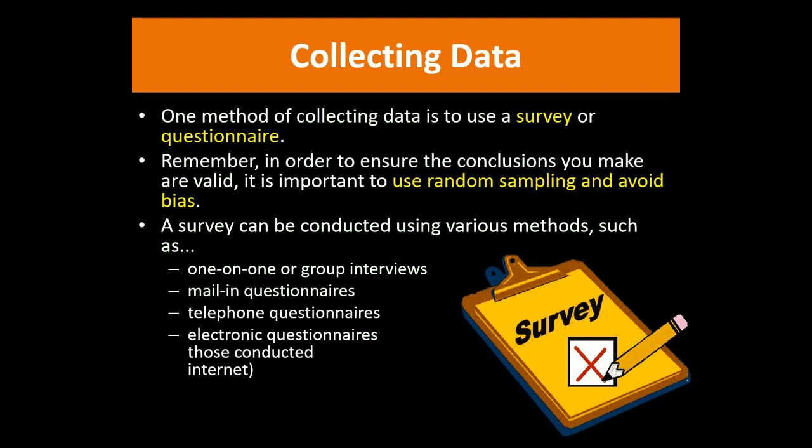When it comes to collecting data from people, we usually do it using a survey or questionnaire, which basically mean the same thing. We want to make sure we're using some sort of decent sampling method, preferably simple random sampling, so that we can avoid bias. Most people probably have an intuitive idea of what bias means, but we'll come back and define it more specifically.